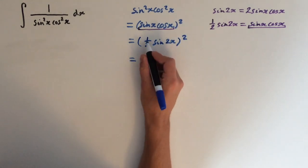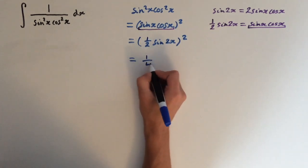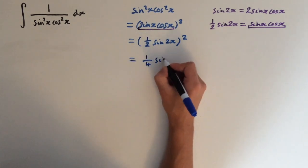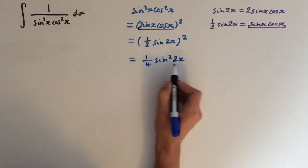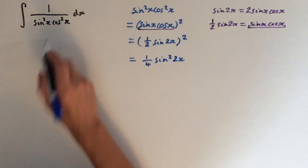And this multiplies out as 1 half to power 2 is a quarter, and sine to power 2 is sine squared 2x. So now we want to substitute this back into the integral.